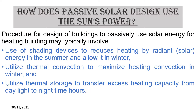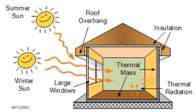How does passive solar design use the sun's power? It uses shading devices to reduce heating by radiant energy in summer and allow it in winter. It utilizes thermal convection to maximize heating in winter, and also utilizes thermal storage to transfer excess heating capacity from daylight to nighttime hours.